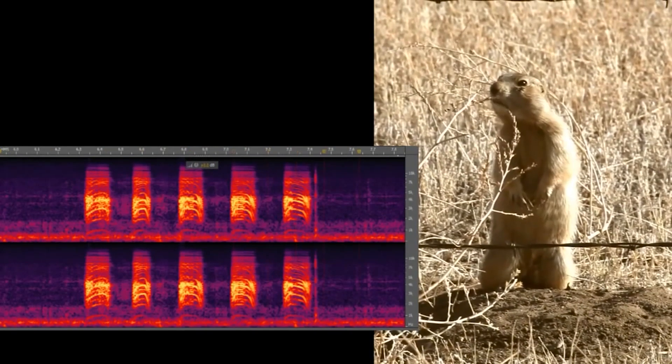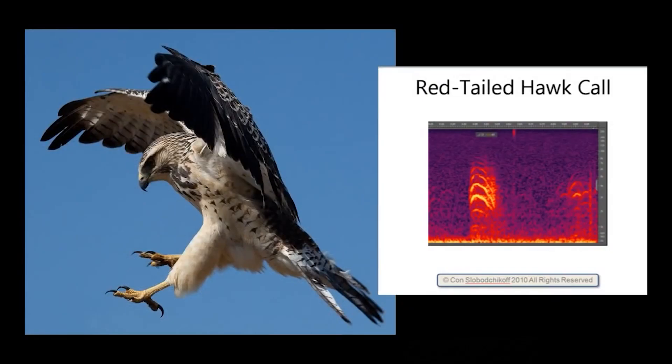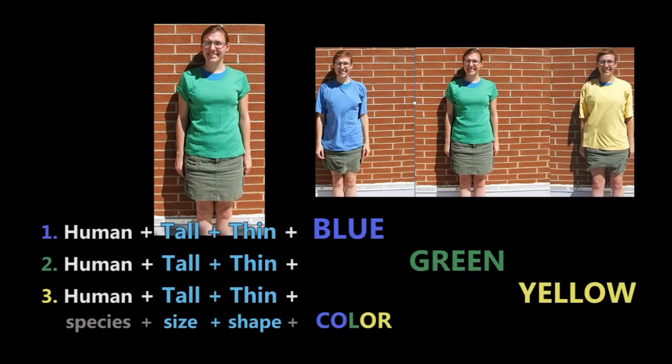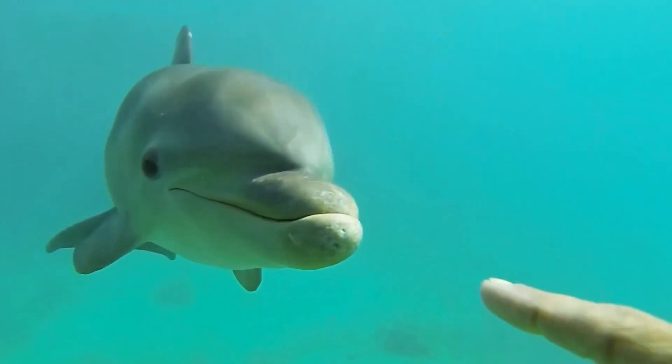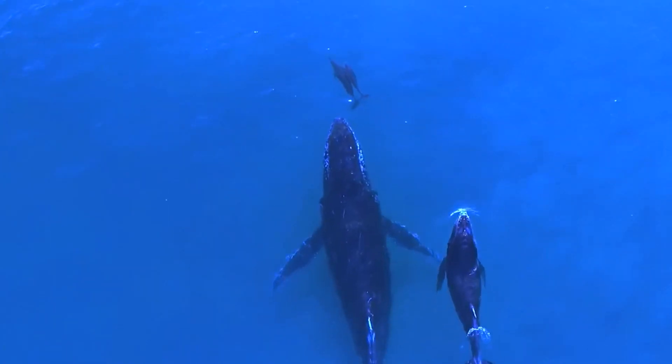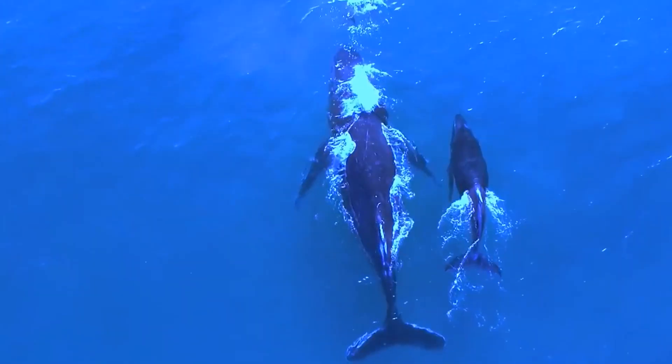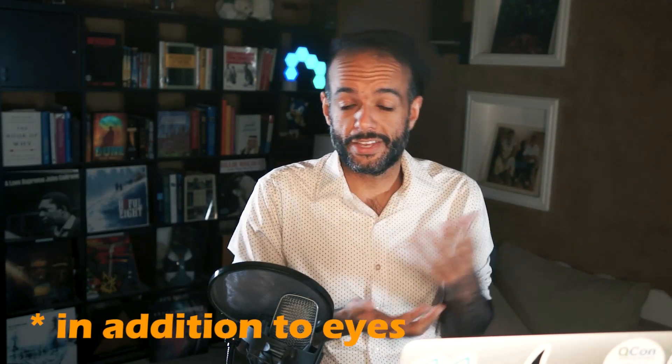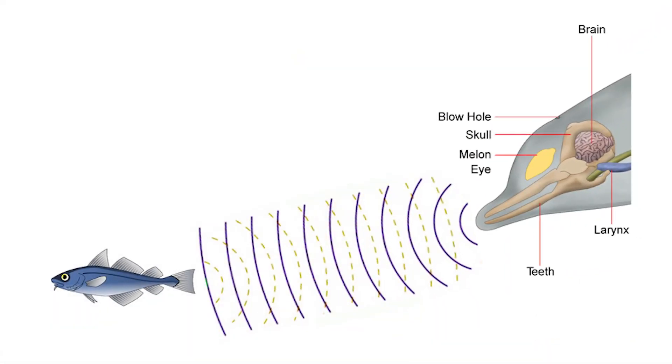We'll look, for example, at the prairie dog, which is an animal that looks like a squirrel. In its vocalizations and sounds, it encodes information such as a wolf is attacking, or a dog is attacking, or a hawk is attacking. But it also describes humans — the color of clothes that we're wearing, and the height and size of the humans. This also applies to more sophisticated animals like dolphins or whales, that have a much more sophisticated apparatus around sound. Not only do they hear and listen to sound, but they see their world through sound using a biotechnology called echolocation, which works kind of like radar.